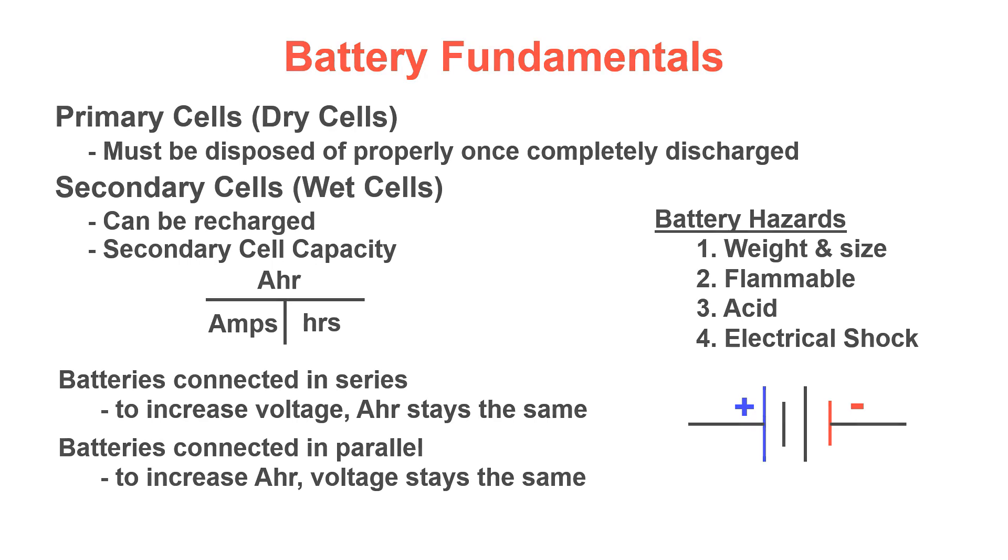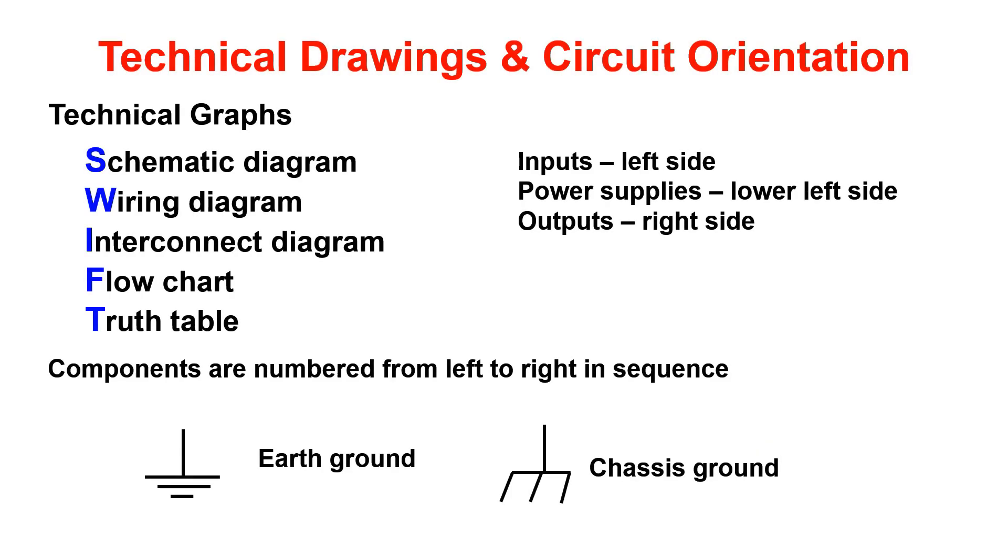This brings us to technical drawings and circuit orientation. In course 101, we are only going to concern ourselves with five of the technical graphs. We'll use the acronym SWIFT to remember them: Schematic diagram, wiring diagram, interconnect diagram, flowchart, and truth table.